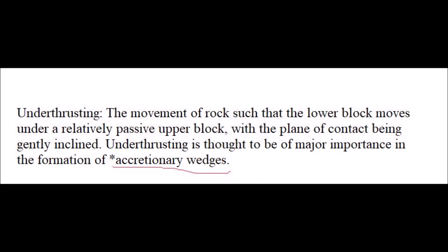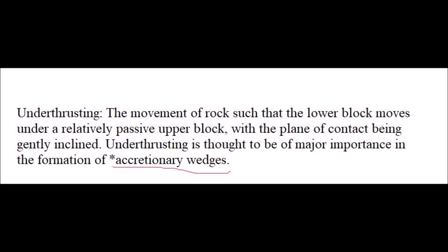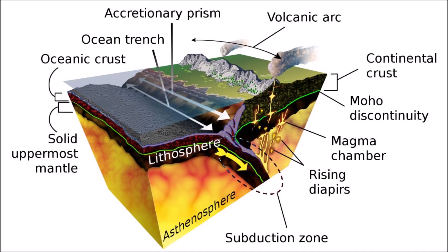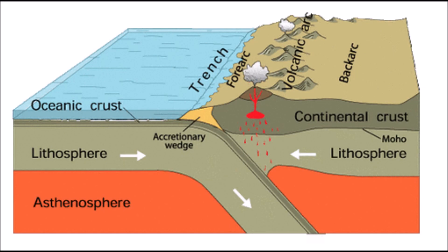The second term in this question is under-thrusting. Under-thrusting is the movement of rock such that the lower block moves under a relatively passive upper block, with the plane of contact being gently inclined. Importantly, under-thrusting is thought to be of major importance in the formation of accretionary wedges, so remember: accretionary wedges are related to under-thrusting.